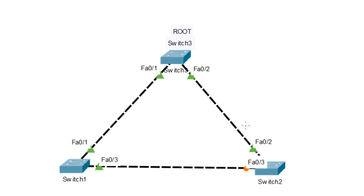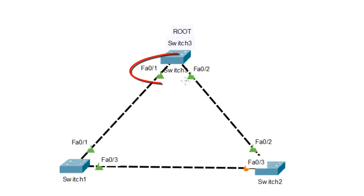A malicious person can come into your network, bring a switch, and configure the priority of that switch to be lower. In the worst case scenario they can make the priority equal to zero, and that switch will become the root bridge, causing problems in the network. That's the reason why, in this scenario where Switch 3 is the root bridge, Root Guard will be configured on ports FA0/1 and FA0/2.